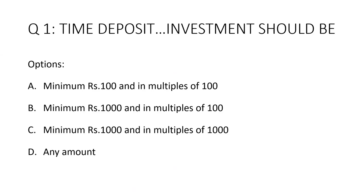Question 1: Time deposit investment. Option A: minimum rupees 100 and multiples of rupees 100. Option B: minimum rupees 1000 and multiples of rupees 100. Option C: minimum rupees 1000 and multiples of rupees 1000. Option D: any amount. The correct answer is Option B — minimum rupees 1000 and multiples of rupees 100.